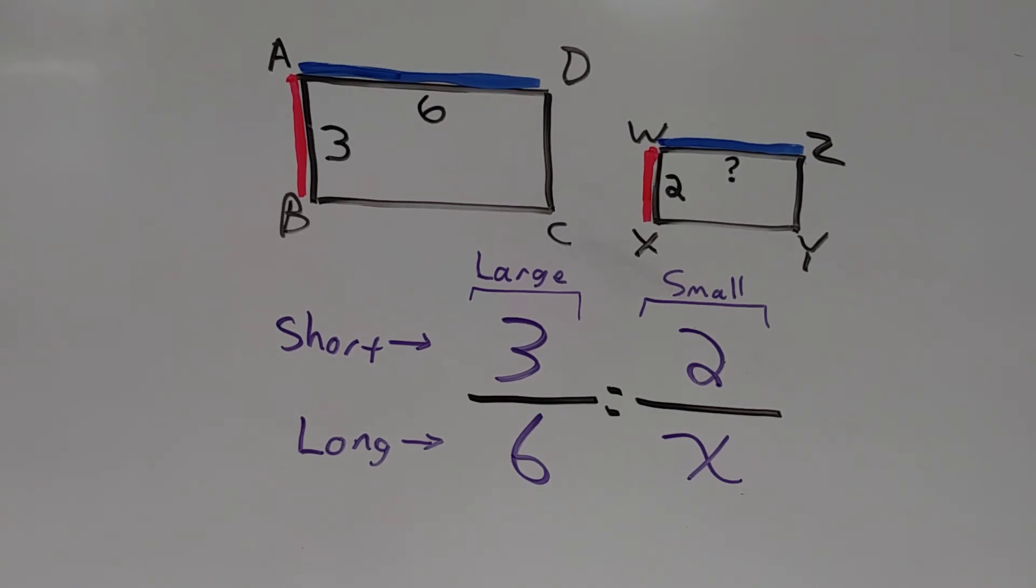So we have three over six equals two over X. You can use whatever variable you prefer. X is a good all-purpose variable, but you could use S for side, L for length, however you want to do it.